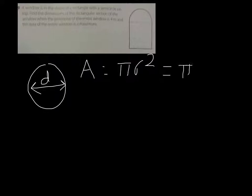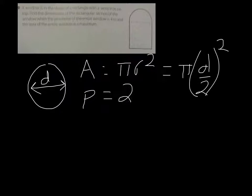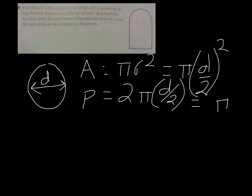which is π(d/2)². And the perimeter of this is equal to 2π times d/2, which is simply equal to πd.